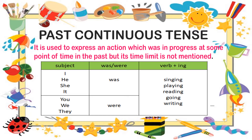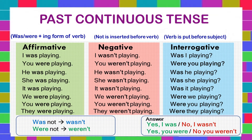Past continuous tense is used to express an action which was in progress at some point of time in the past, but its limit is not mentioned. The helping verbs used are 'was' for singular personal pronouns and 'were' for plural pronouns, plus the '-ing' form of the verb. Here are examples showing affirmative, negative, and interrogative sentences, using 'was' and 'were' according to the pronouns, and the word 'not' for negative sentences.